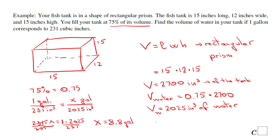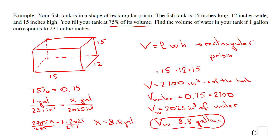The volume of the water in gallons is 8.8 gallons. That's it for today's lesson. If you enjoyed today's lesson, don't forget to click the like button and come back to C Square for more help. Thank you.